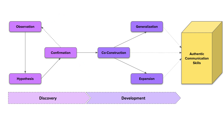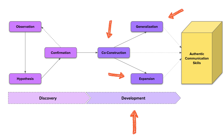Once a message has been identified, we move on to the Development stage, where we begin to model and build authentic communication skills around that message. This begins with the Co-Construction step, and then continues on to Generalization and Expansion, which can be done in parallel. Let's take a closer look at each step to understand how they work.